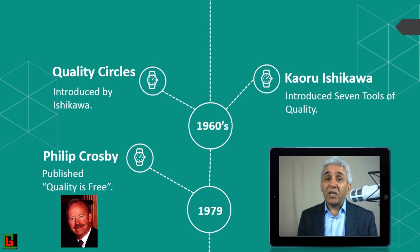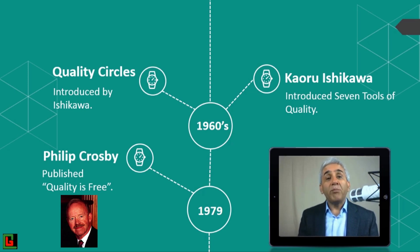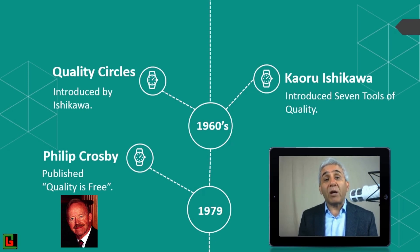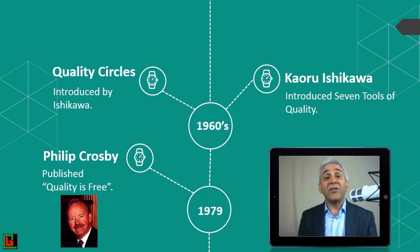In 1979, Philip Crosby — another quality guru — published his book 'Quality is Free,' which made him famous. At that time it was assumed that achieving better quality required spending more money. However, Crosby argued that by solving quality problems you reduce costs, so whatever you spend to achieve quality is returned in terms of better productivity and higher sales. That was his concept of quality is free.